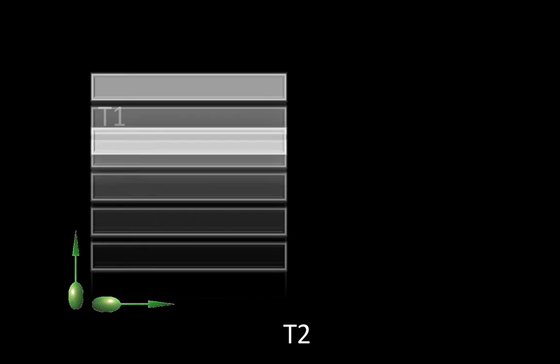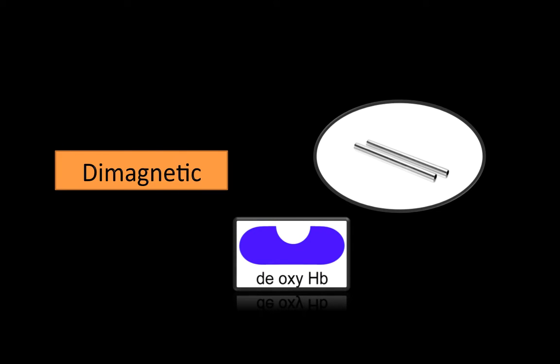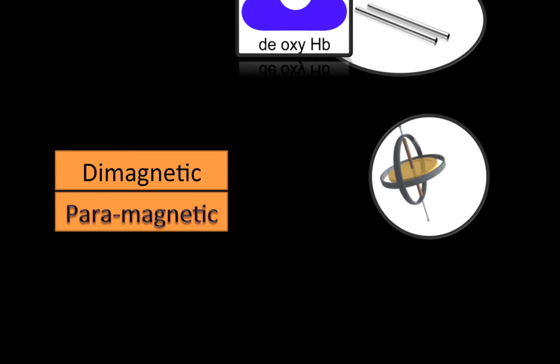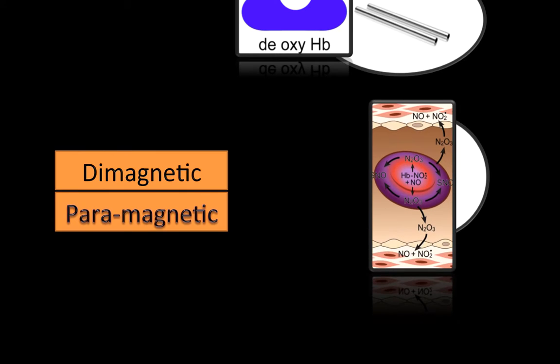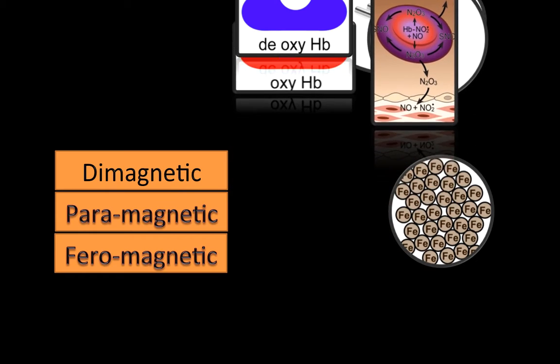There are some special properties of magnets. Diamagnetic substances usually do not get influenced by the external magnetic field — deoxyhemoglobin is such a structure. Paramagnetics are materials that are affected by the external magnetic field and can be aligned in its direction. Methemoglobin and oxyhemoglobin are paramagnetic substances.